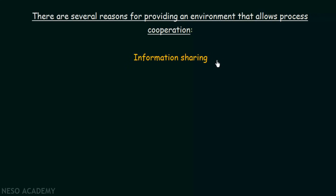The first reason is information sharing. Several users may be interested in a single piece of information — for example, a shared file. When several users are interested in a single piece of information, we will have to provide an environment in which the information can be accessed concurrently. Both the users or several users will be able to access that information at the same time. These processes will need to communicate or cooperate with each other in order to provide this information sharing.